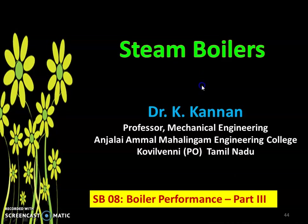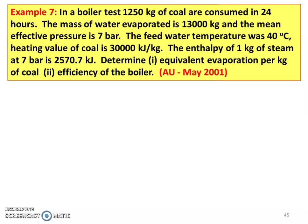We will take a few problems from the recent Anna University question paper. Example 7: In a boiler test, 1250 kg of coal are consumed in 24 hours. The mass of water evaporated is 13,000 kg and the mean effective pressure is 7 bar. The feed water temperature is 40°C, heating value of the coal is 30,000 kJ/kg. The enthalpy of 1 kg of steam at 7 bar is 2570.7 kJ/kg. Determine the equivalent evaporation per kg of coal and the efficiency of the boiler. This is from the May 2001 question paper.